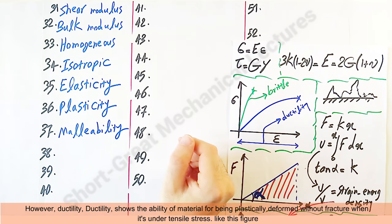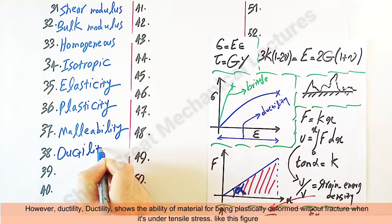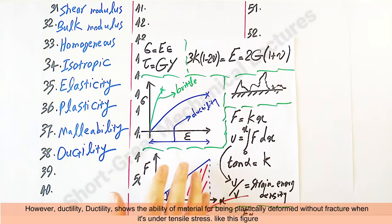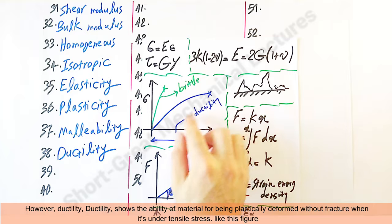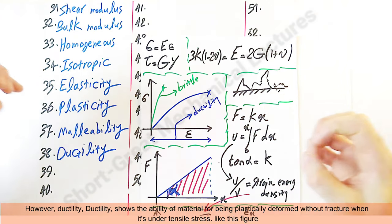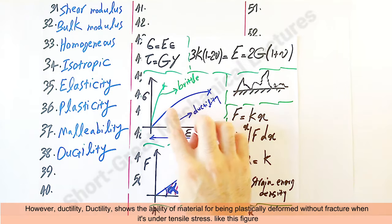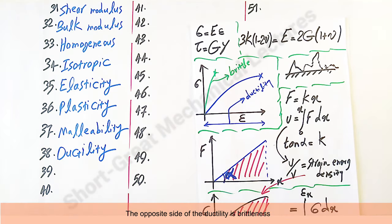However, ductility shows the ability of material for being plastically deformed without fracture when it's under tensile stress, like this figure. The opposite side of the ductility is brittleness.